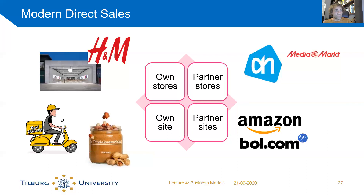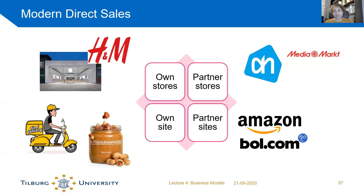Modern direct sales basically means simply selling your product, and depends on your type of innovation — how you sell your products. You can have your own stores like H&M, your own website such as a restaurant food delivery site, sell through partner sites like Thuisbezorgd or Uber Eats, use Amazon or Bol.com as your platform, or sell your products in other stores — for example, selling your peanut butter in Albert Heijn, or your television through the Media Markt.